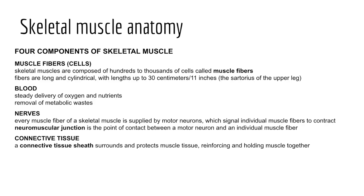Nerves are a major component of skeletal muscle tissue. In fact, each and every muscle fiber in a skeletal muscle is supplied by an axon branch of a somatic motor neuron, which signals muscle fibers to contract. The structural point of contact — what we call the functional site of communication between a motor neuron and a muscle fiber — is called the neuromuscular junction. We'll look at neuromuscular junctions in considerable detail later in this lecture.